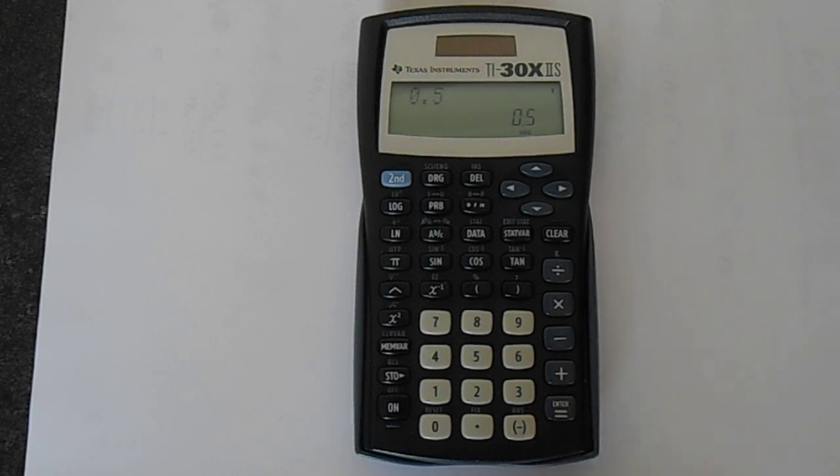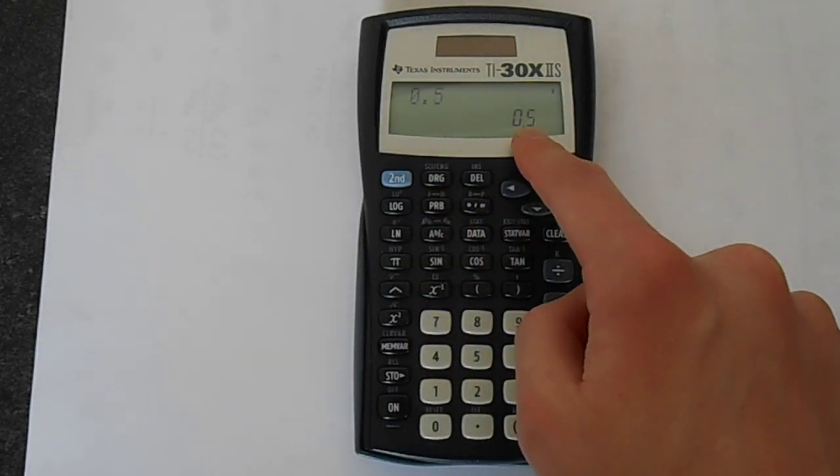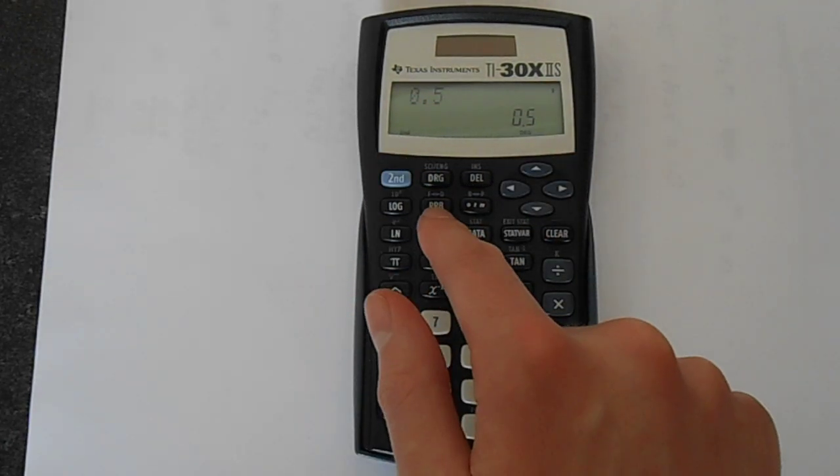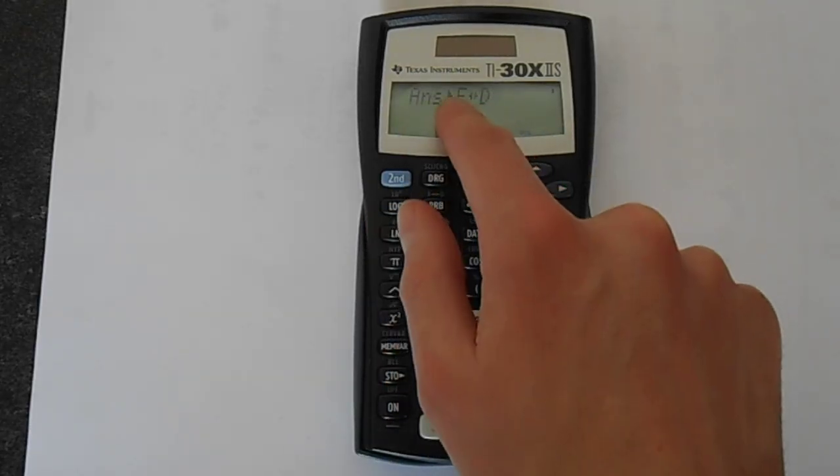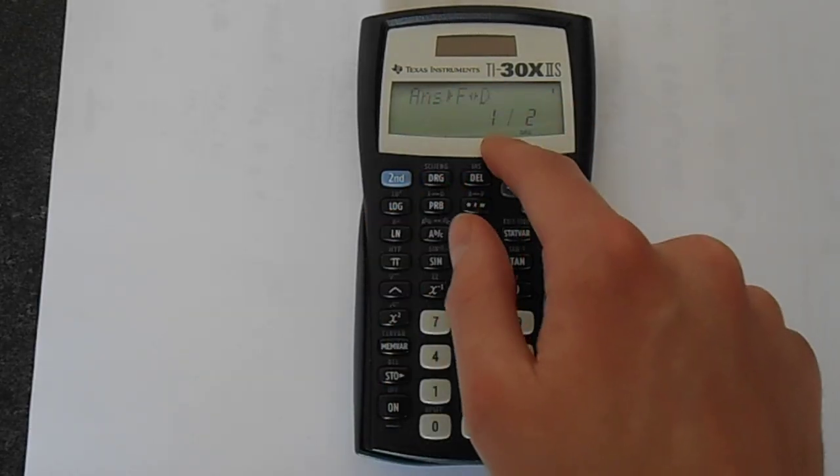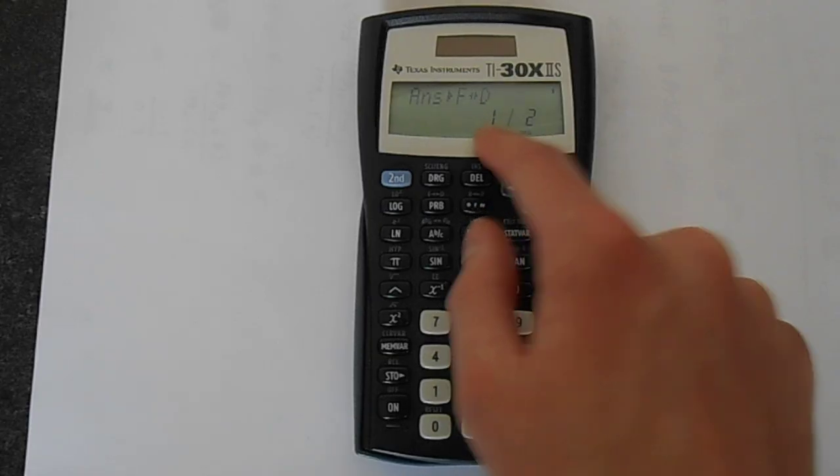For example, say we put 0.5 enter. Enter puts it into the memory here, then you do second function and then prob again and it will realize it works the other way around. So we're getting one half.